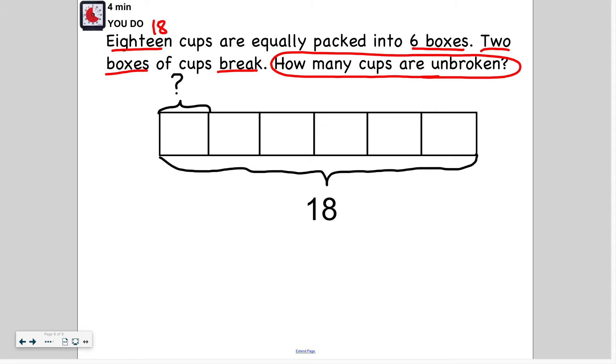Okay, so I have 18 cups and I'm placing them into six boxes. I can do one cup at a time into all six boxes until I get to 18. So I did one, two, three, four, five, six in the first round. Then the second round: seven, eight, nine, ten, eleven, twelve. Then 13, 14, 15, 16, 17, 18. I can stop there. So I see there are three cups in each box.